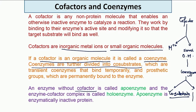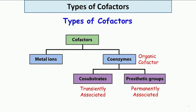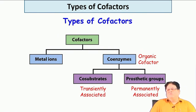When the coenzyme is permanently bound to the enzyme, it is called a prosthetic group. So to summarize: cofactors are essential for enzyme activity; cofactors can be metal ions or coenzymes; coenzymes are organic cofactors; if transiently associated they are co-substrates; if permanently bound to the enzyme they are prosthetic groups.